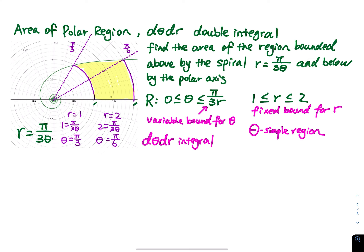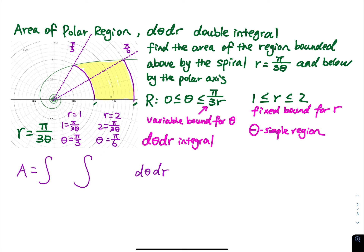We are setting up a double integral to find the area of this region. It is a d-theta dr integral because theta is changing. If r were changing we would set up a dr d-theta integral. The area equals the double integral of r, with theta going from 0 to pi over 3 times r for the inner integral, and r going from 1 to 2 for the outer integral.